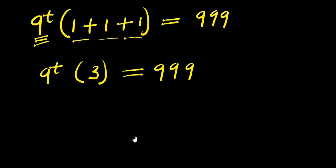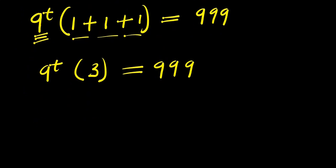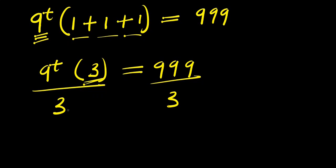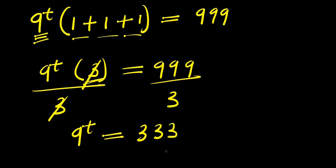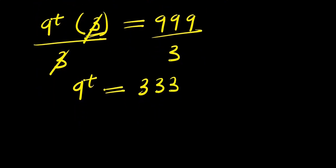From here we divide each part of this equation by 3. The 3 cancels, and we have 9^t equals 999 divided by 3, which is 333.